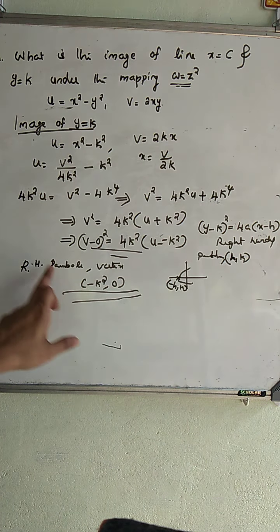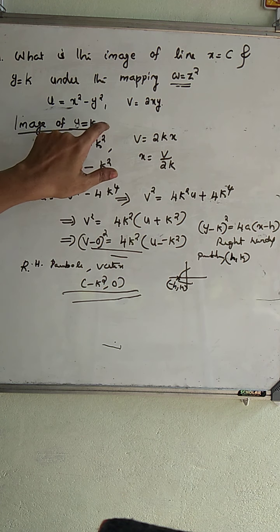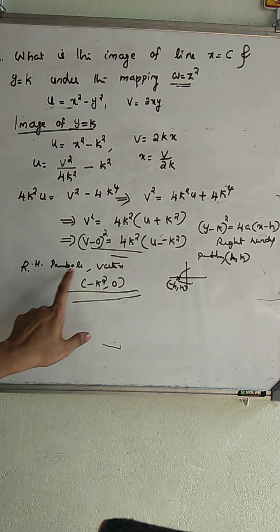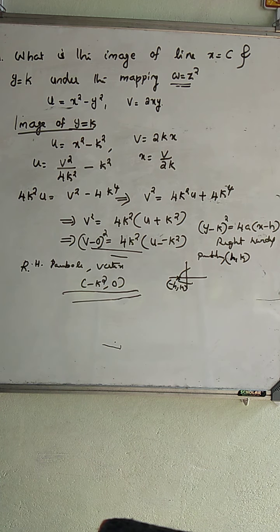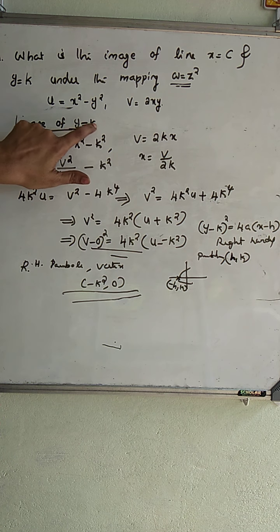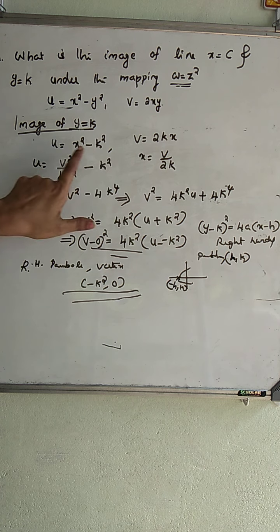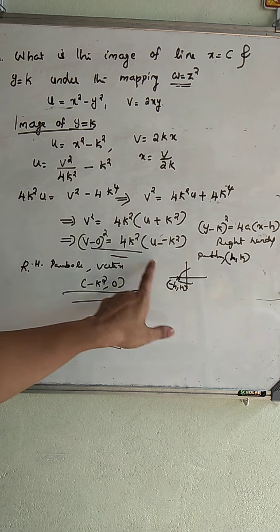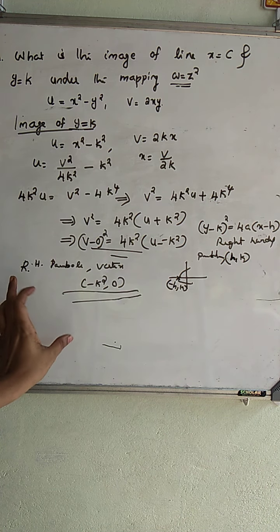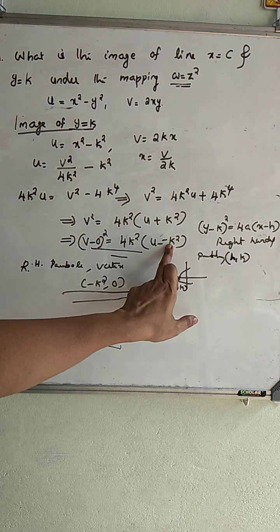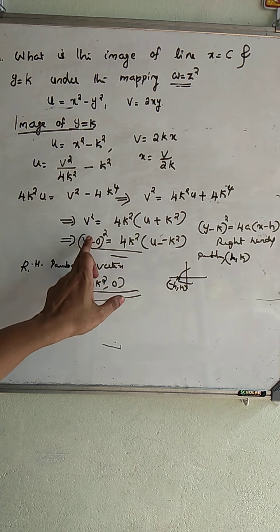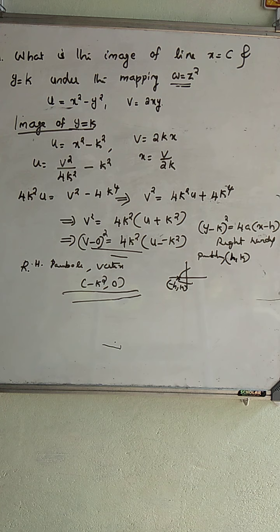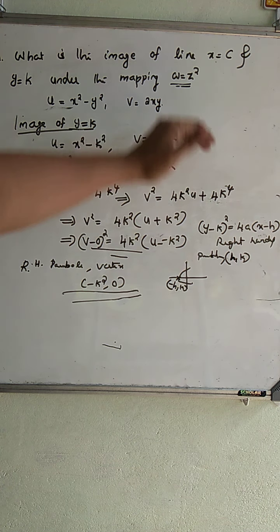In general, whatever value is given for Y — whether Y equal to 0, 1, 2, 3, etc. — you substitute that value for K, simplify the expressions for U and V, and you obtain a right-handed parabola whose vertex is given by minus K square, 0. This is the procedure for finding the images of both vertical lines X equal to C and horizontal lines Y equal to K under the transformation W equal to Z square.